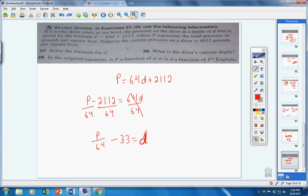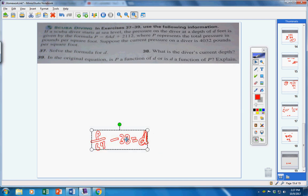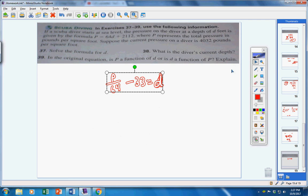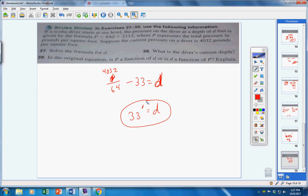Number 38, suppose the pressure is 4032, how far down is the diver? Here's my formula right here. They're telling you the diver has this much pressure on him 4032 so where p is I'm going to put 4032. Take 4032 divide it by 64 minus 33 and you will actually get 33 so how far down is the diver when he's down 33 feet.